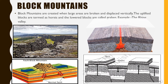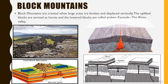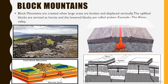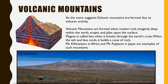Block mountains are created when large areas are broken and displaced vertically. The uplifted blocks are termed as horst and the lowered blocks are called graben. An example is the Rhine Valley. Volcanic mountains are formed due to volcanic activities — when molten rock deep within the earth erupts and piles upon the surface. Magma is called lava when it breaks through the earth's crust. When the ash and lava cool, it builds a cone of rock. Mount Kilimanjaro in Africa and Mount Fujiyama in Japan are examples of such mountains.